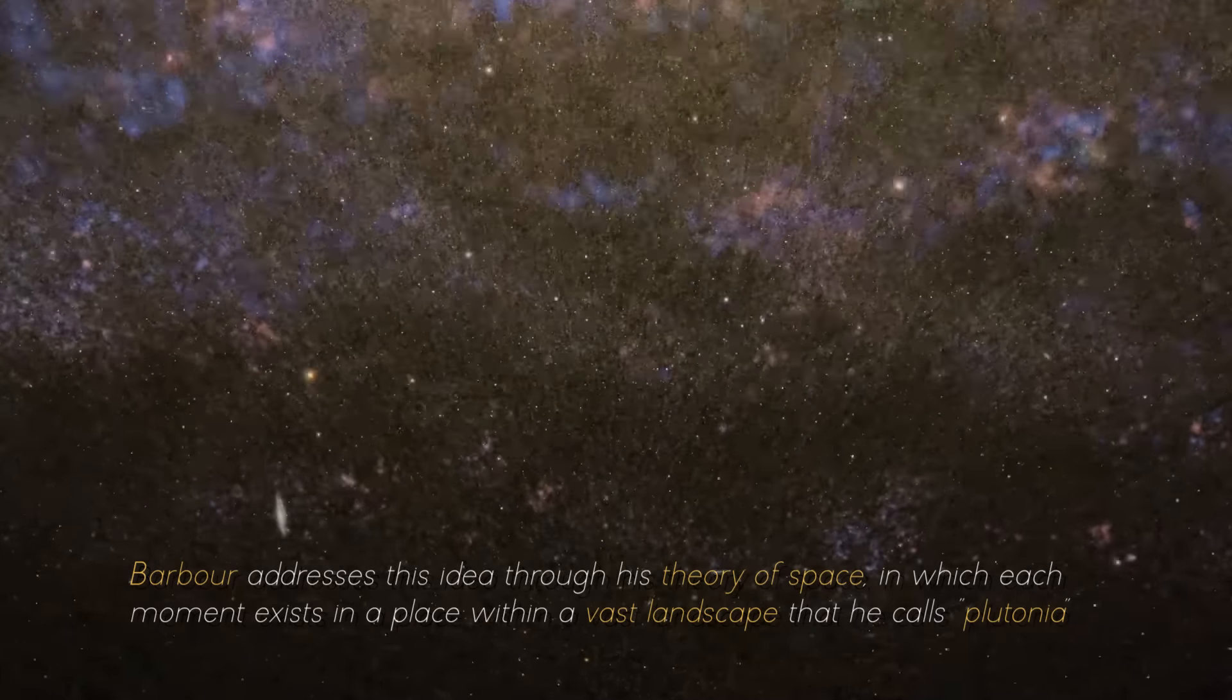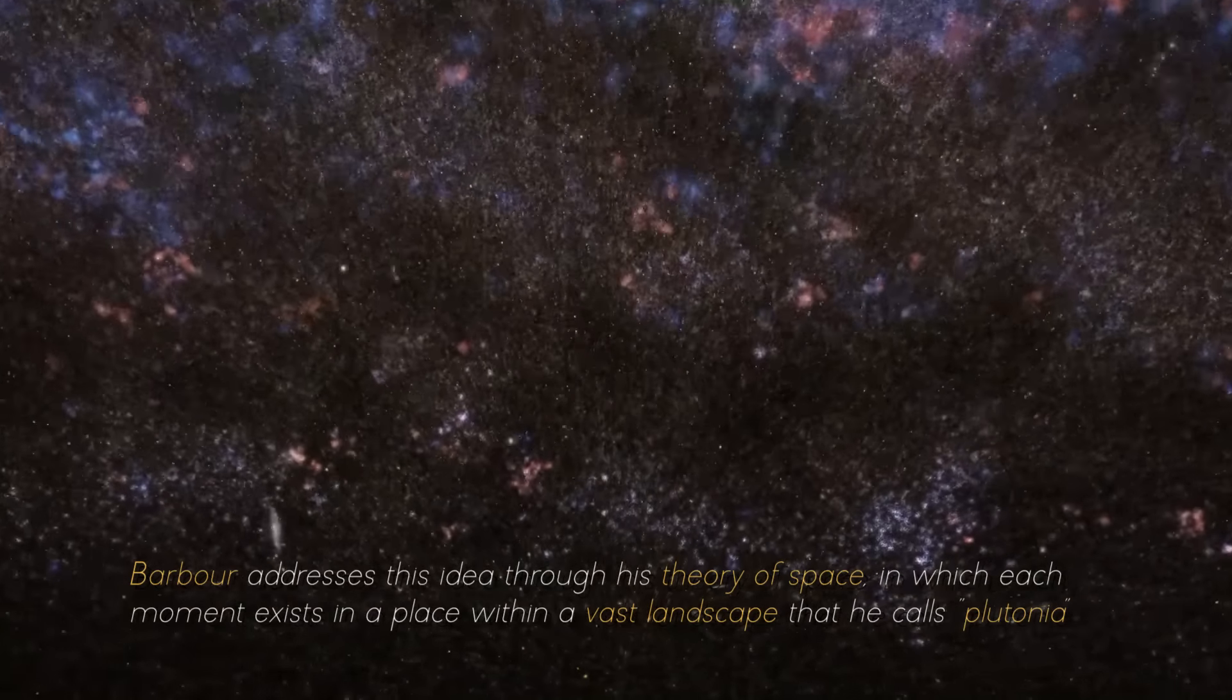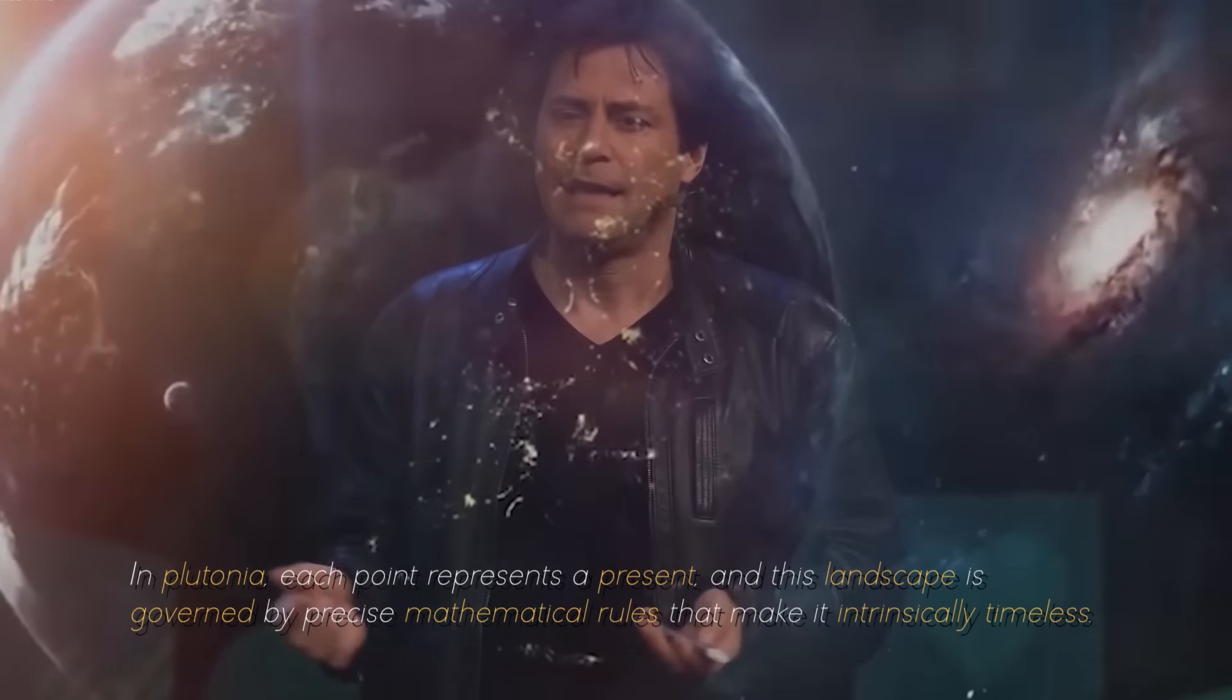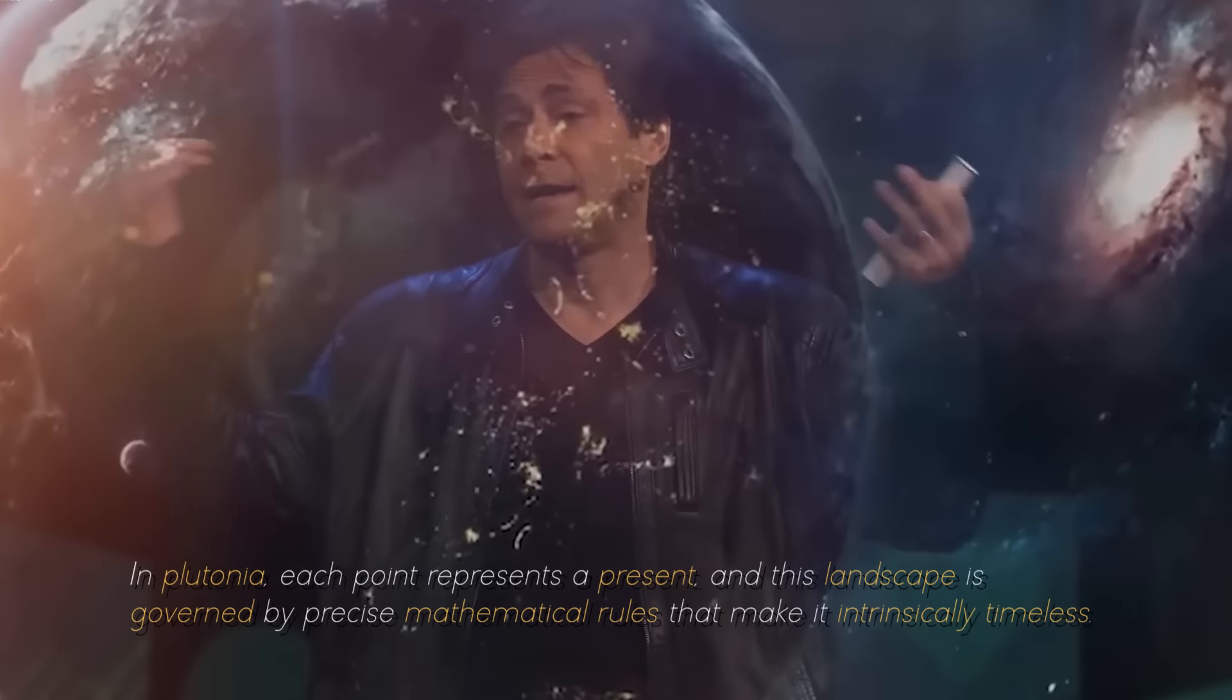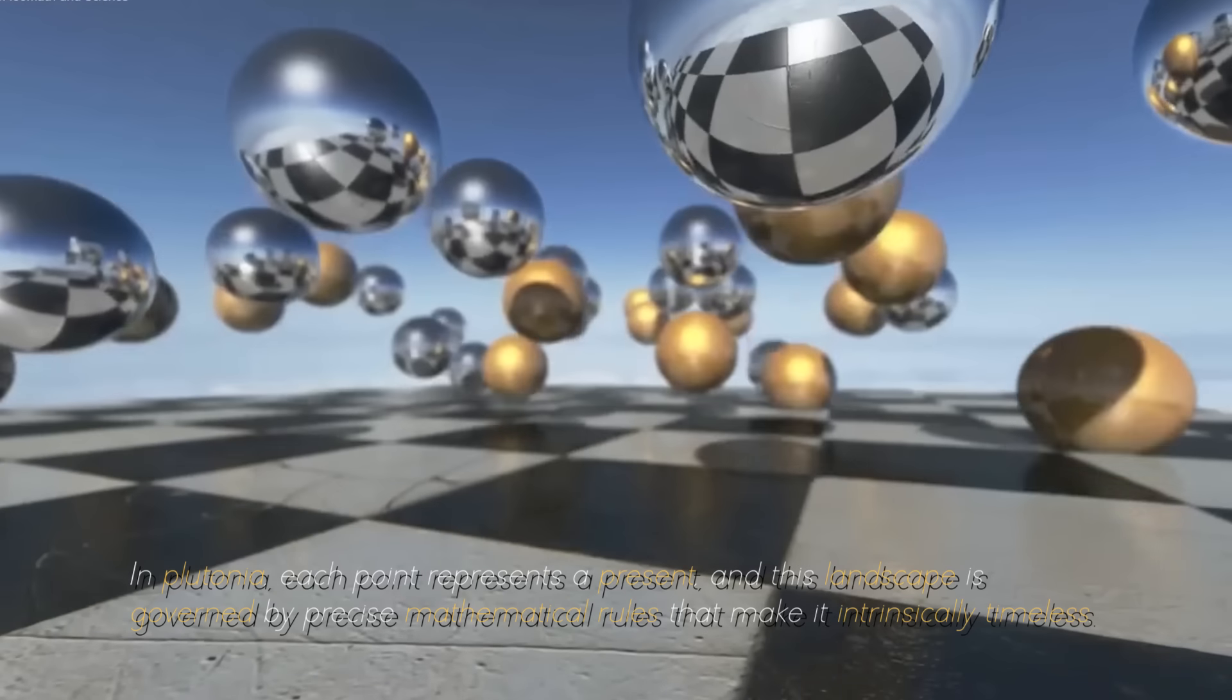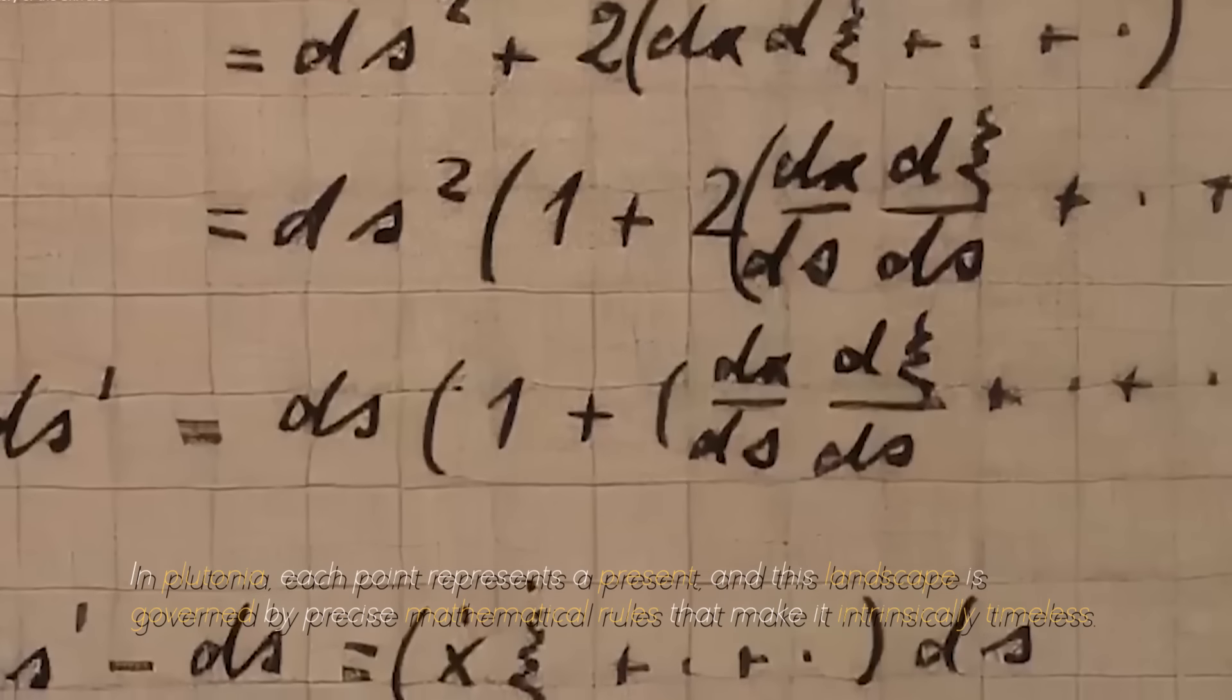Barbour addresses this idea throughout the series of space, in which each moment exists in a place within a vast landscape that he calls Platonia. In Platonia, each point represents a present, and this landscape is governed by precise mathematical rules that make it intrinsically timeless.